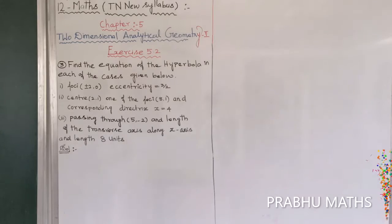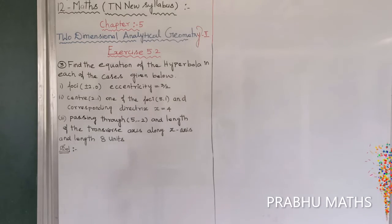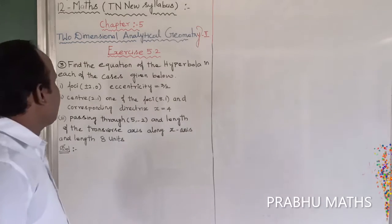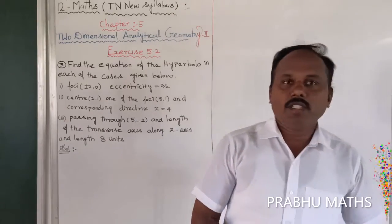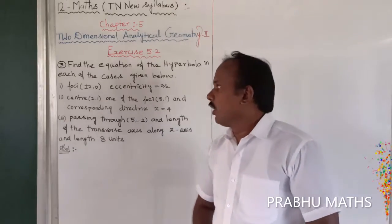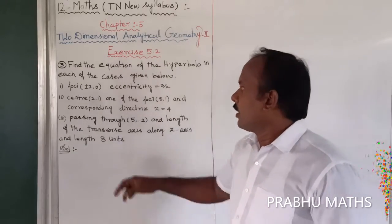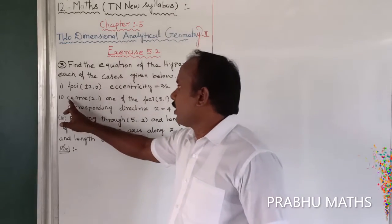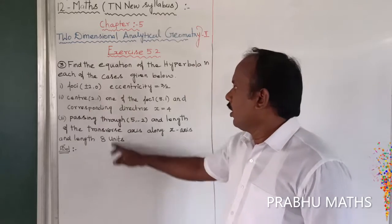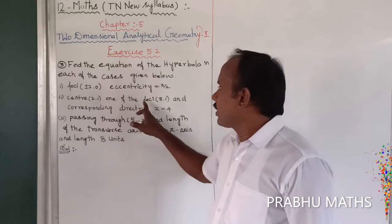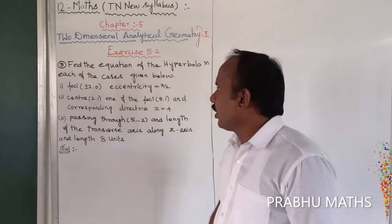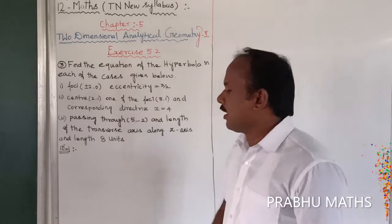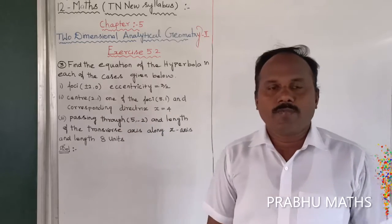Find the equation of the hyperbola for each of the given cases. The center is (2,1), the focus is (8,1), and the corresponding directrix is x = 4.